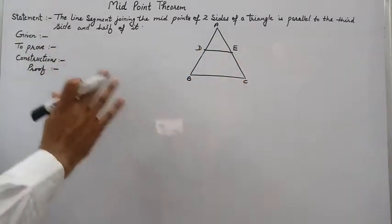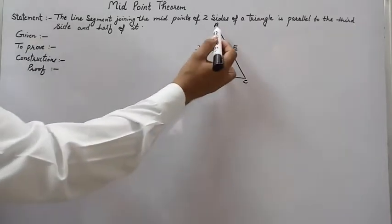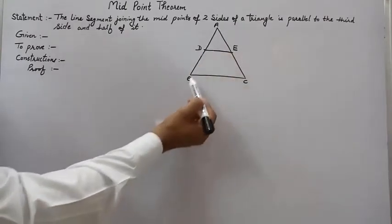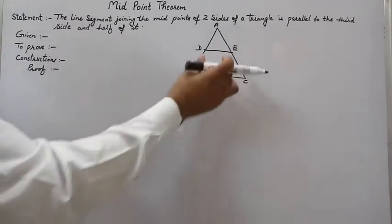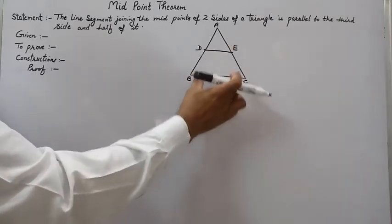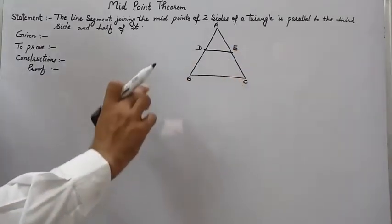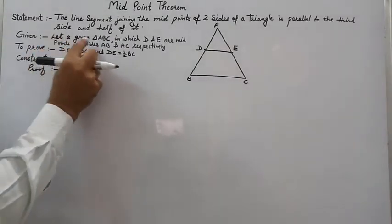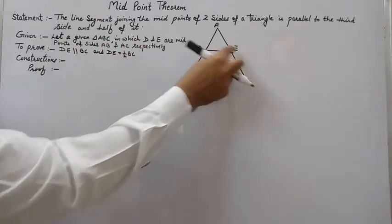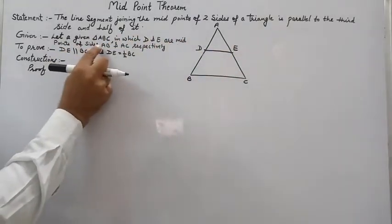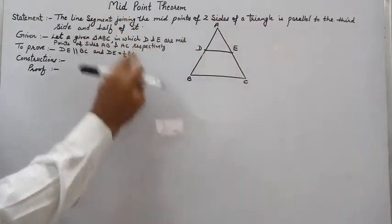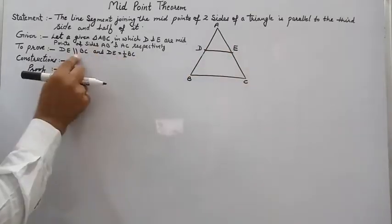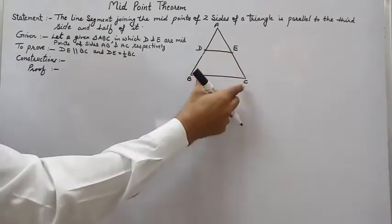In this theorem, it is given that triangle ABC is given, and D and E are the midpoints of two sides. We have to prove that DE is parallel to BC and DE is equal to half of BC. So we write: given a triangle ABC in which D and E are midpoints of sides AB and AC respectively.